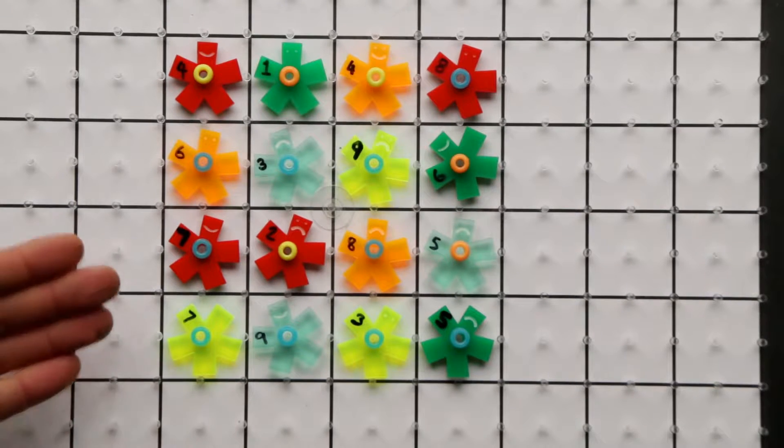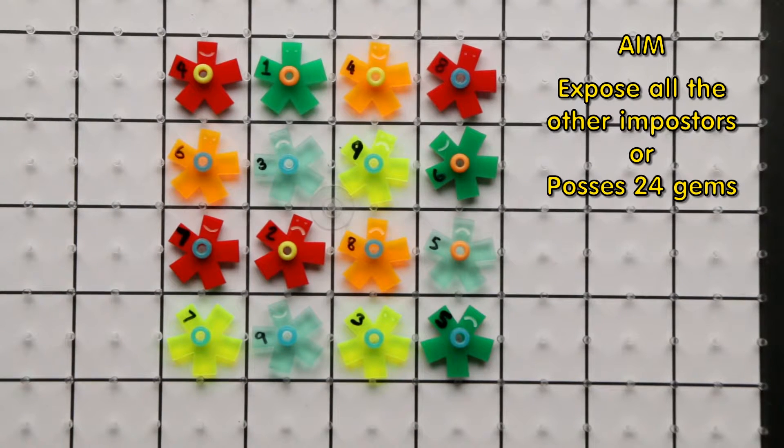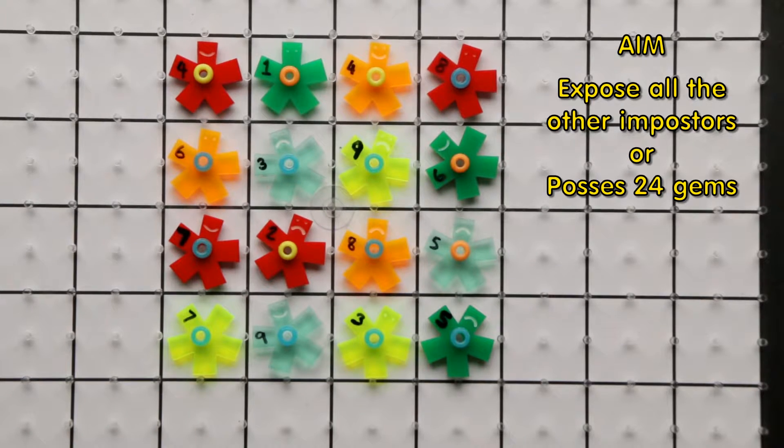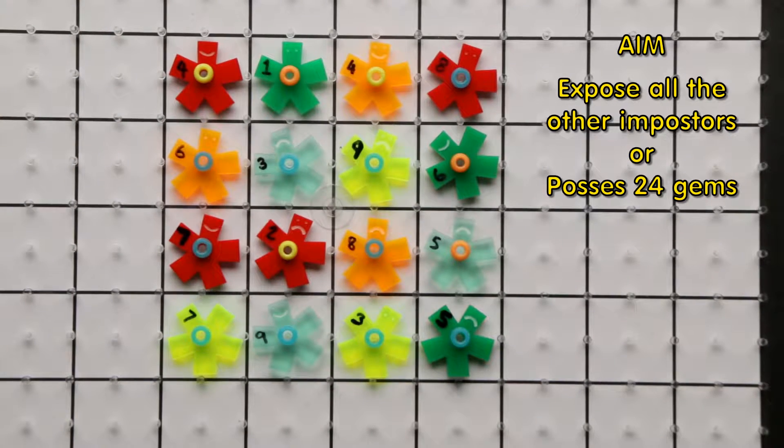And the aim of the imposters is to either expose all the other imposters or to possess 24 gems to hire an assassin to poison all of these people so you can steal all their gems. For example,